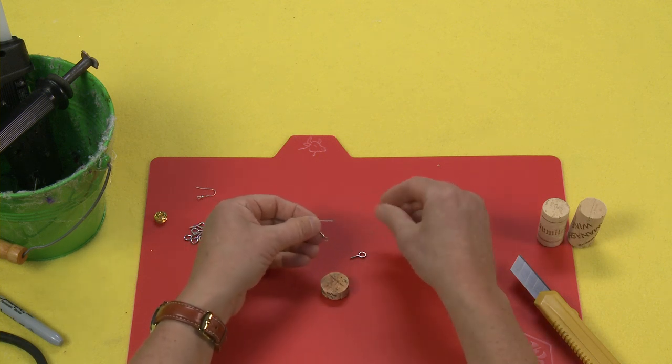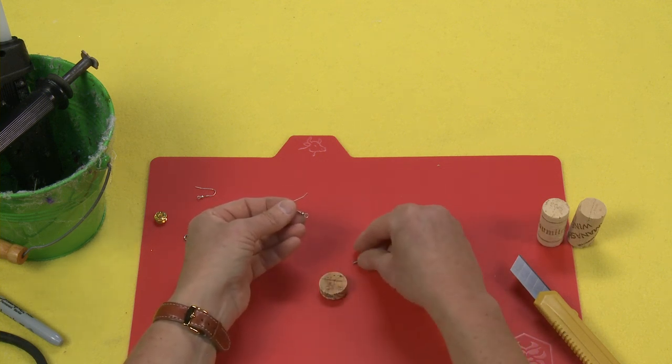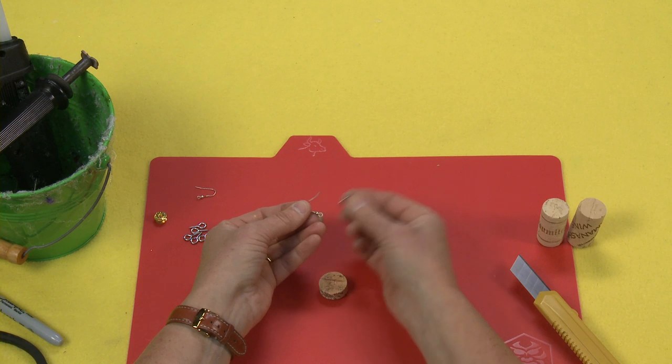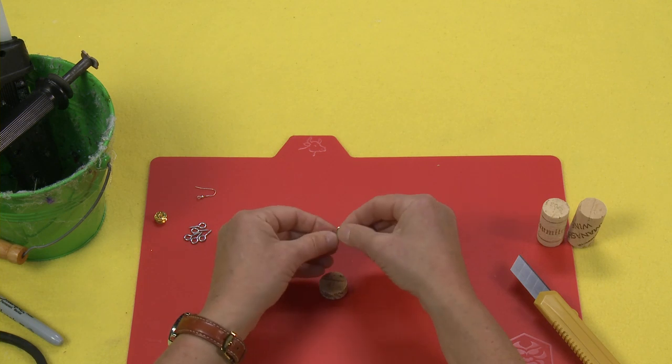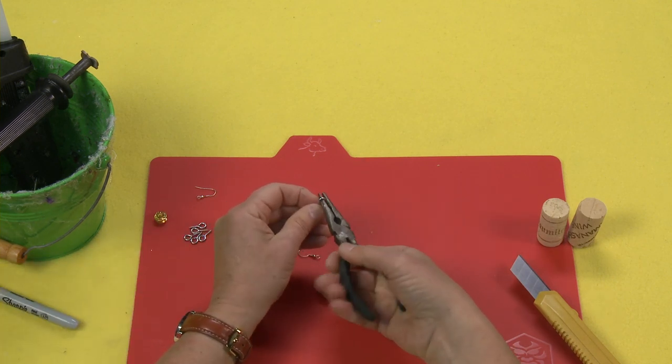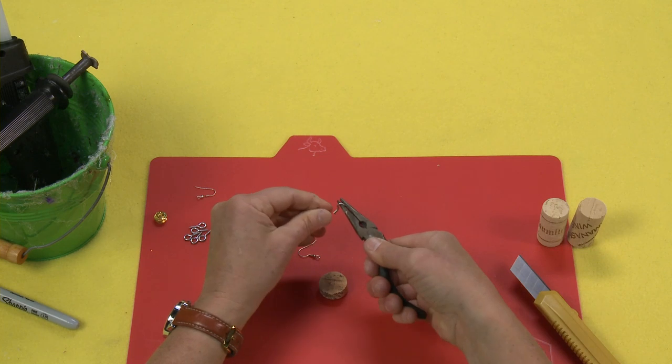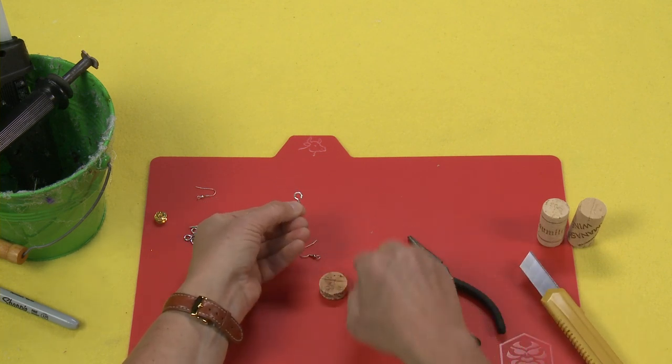Now when you're making an earring we want to get this attached first and you might be able to slide it through, but I think what you're probably going to need to do like I have found is get those needle nose pliers in there and open it up just a tiny little bit. See how I've opened that up just a tiny little bit so that I can slide on the earring back finding.